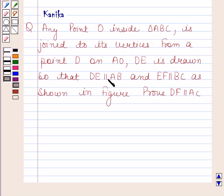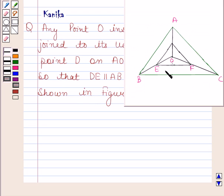DE is drawn so that DE is parallel to AB and EF is parallel to BC as shown in figure. Prove that DF is parallel to AC. Now this is the figure given to us and we have to prove that DF is parallel to AC.